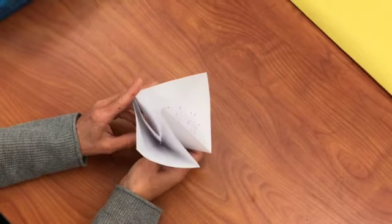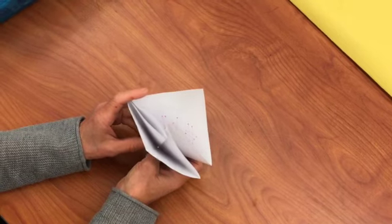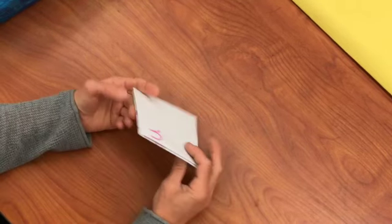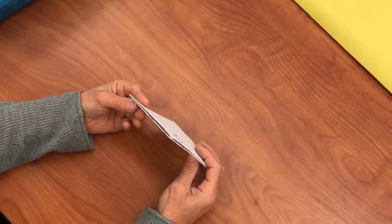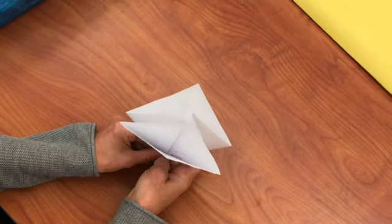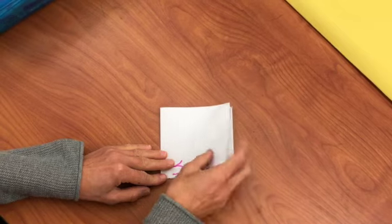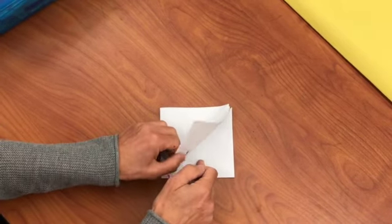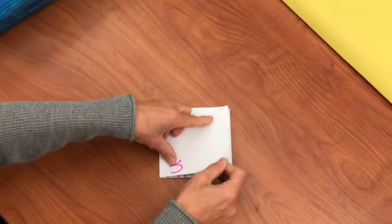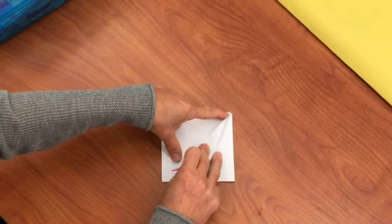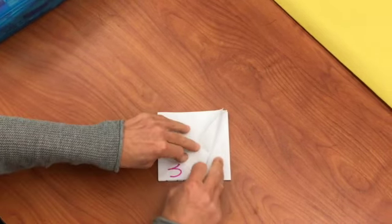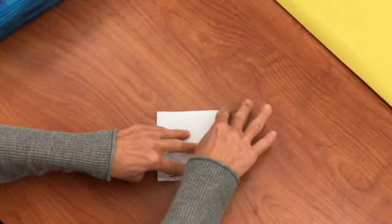On the top, you have all of these open edges, open sides. The other side is closed folds. Hold it so those open edges are at the top, away from you. Take this first flap, hold that corner, fold it in to that center line, and crease it.